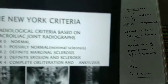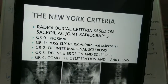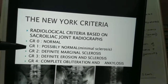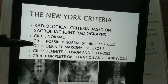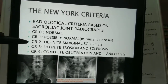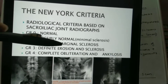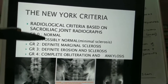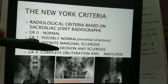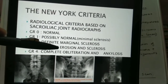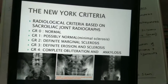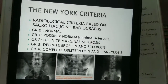The grading used is the New York criteria. In grade 0 it is normal; grade 1 is minimal sclerosis; grade 2 is definite sclerosis at the margins; grade 3 is the formation of erosions and sclerosis; and grade 4 is obliteration and ankylosis.